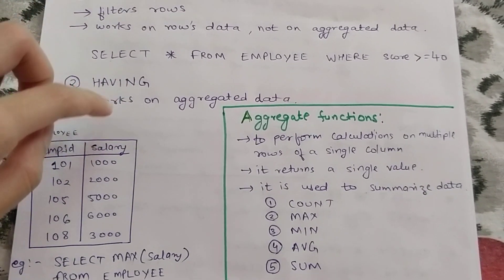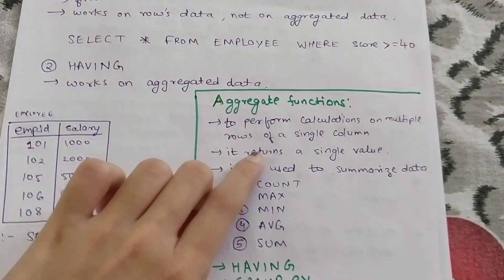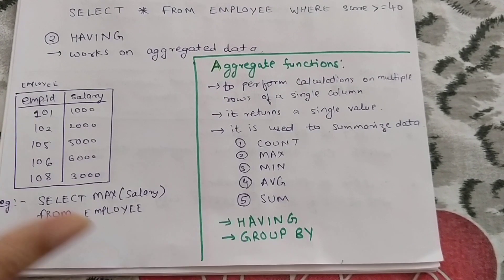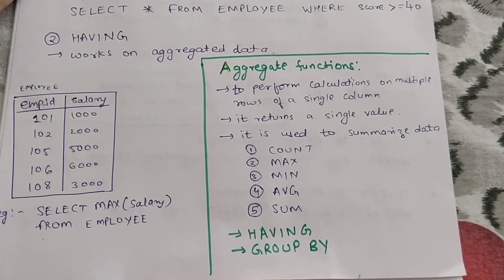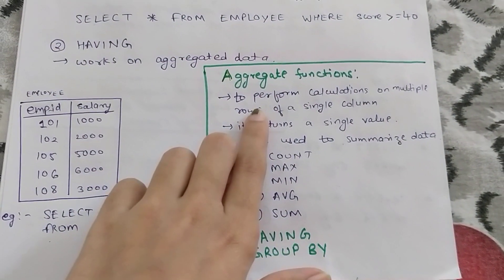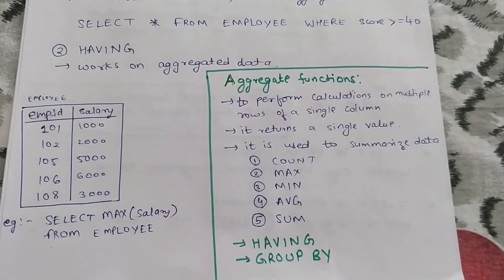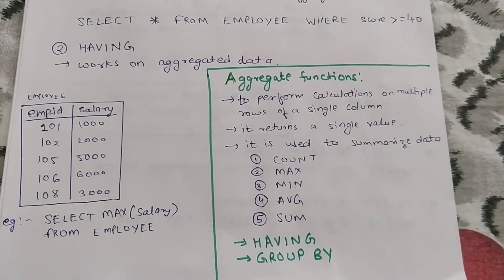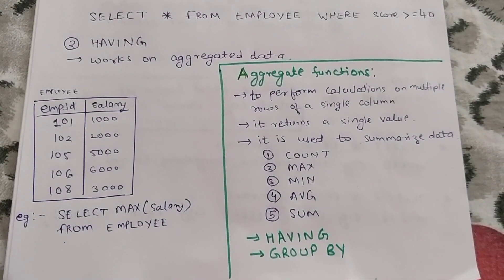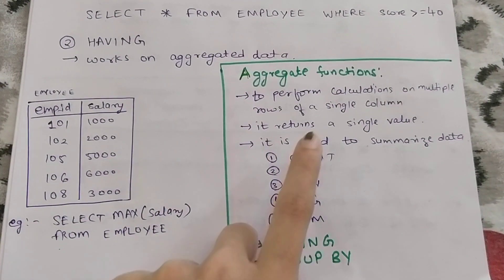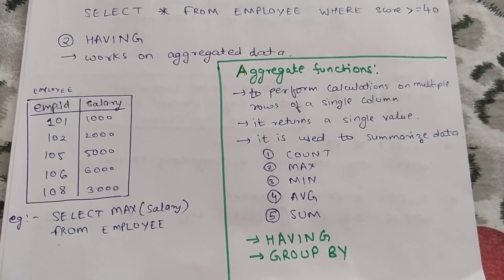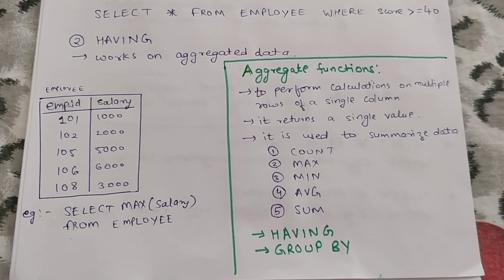Now, what is aggregate data? To understand aggregate data, we'll understand what aggregate functions are. Aggregate functions are used to perform calculations on multiple rows of a single column. They will return a single value. They are used to summarize data and for grouping data.